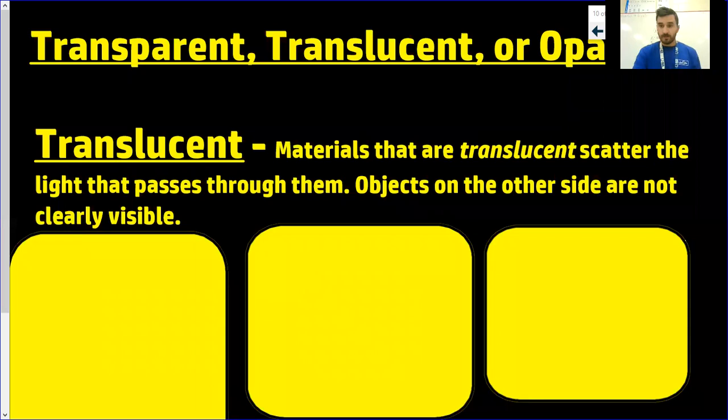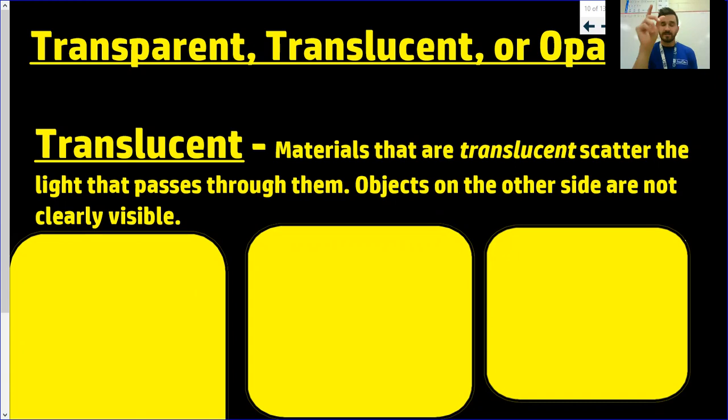Translucent does allow light through, but not all of it. The light kind of scatters or refracts through, but the object on the other side is kind of blurry — it's not something you can clearly see. So if that fishbowl was translucent, when I looked into it I would see an orange blob, but I maybe wouldn't know it's a goldfish. The reason I know it's a goldfish is because it's transparent — I can see all the way through.